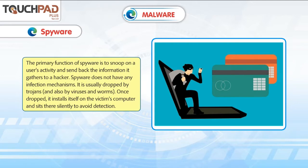Spyware: The primary function of spyware is to snoop on a user's activity and send back the information it gathers to a hacker. Spyware does not have any infection mechanisms. It is usually dropped by Trojans and also by viruses and worms. Once dropped, it installs itself on the victim's computer and sits there silently to avoid detection.